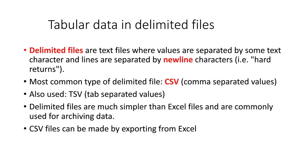A very typical form for tabular data is called delimited files. Delimited files are simple text files where the values of the data are separated by some kind of text character, and each line with a hard return represents a new row in the table. The most common kind is a CSV file, which stands for comma separated values. There are also tab separated value files where fields are delimited by tabs.